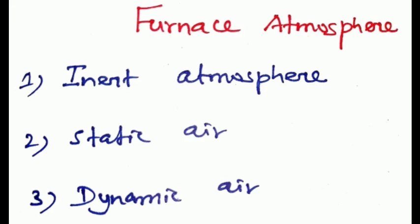Furnace atmosphere: There are several types of atmosphere used. One is inert atmosphere. Here, oxygen is removed by passing nitrogen gas. Nitrogen gas is passed and excess oxygen is removed. Second one is static air, and third one is dynamic air, where compressed air is passed.